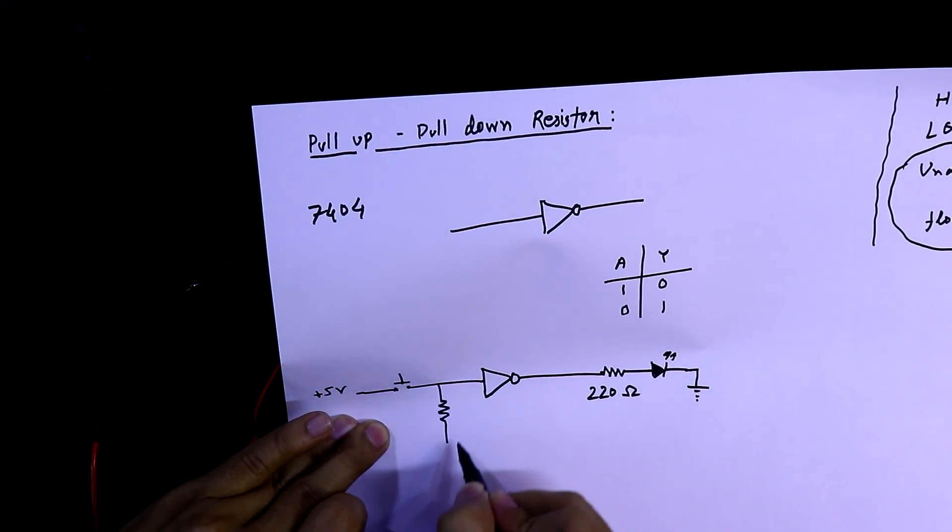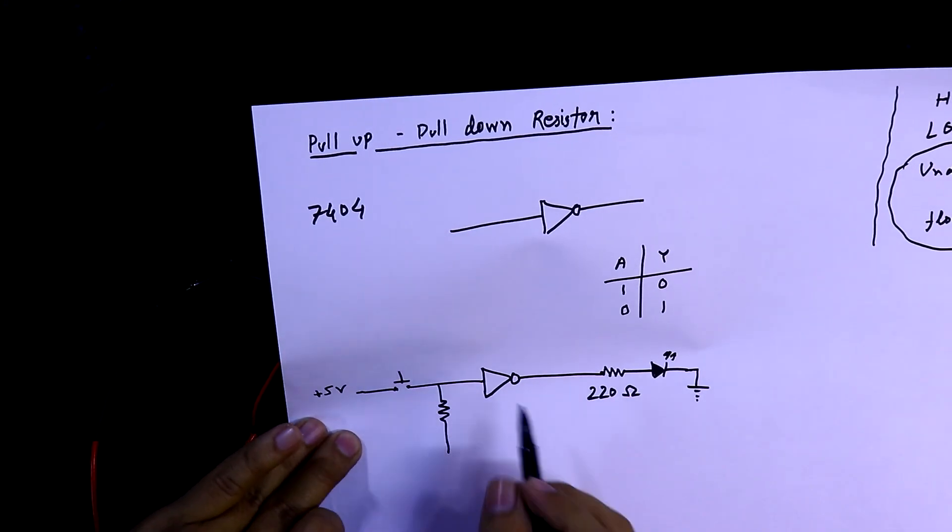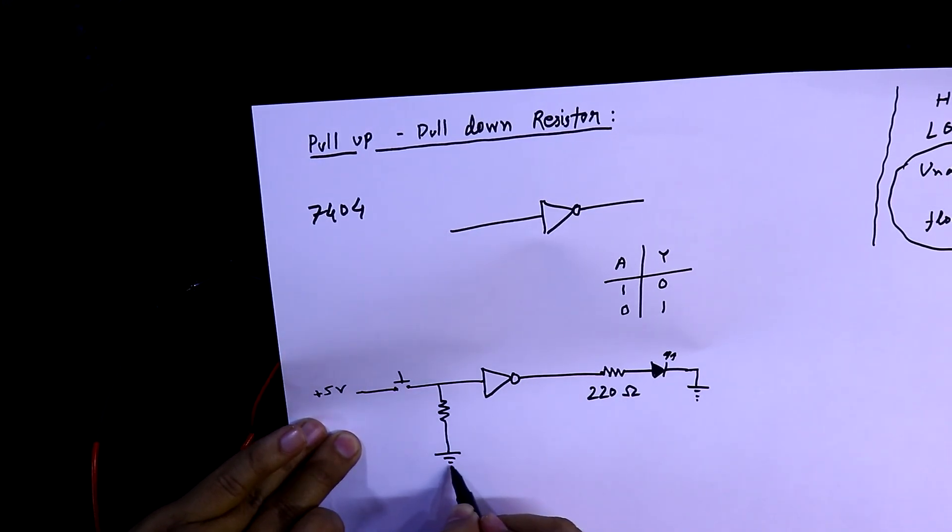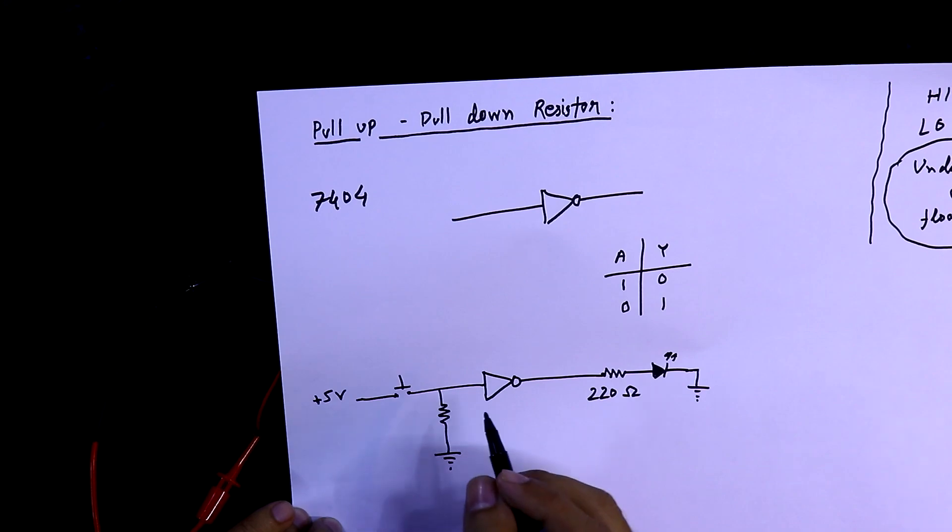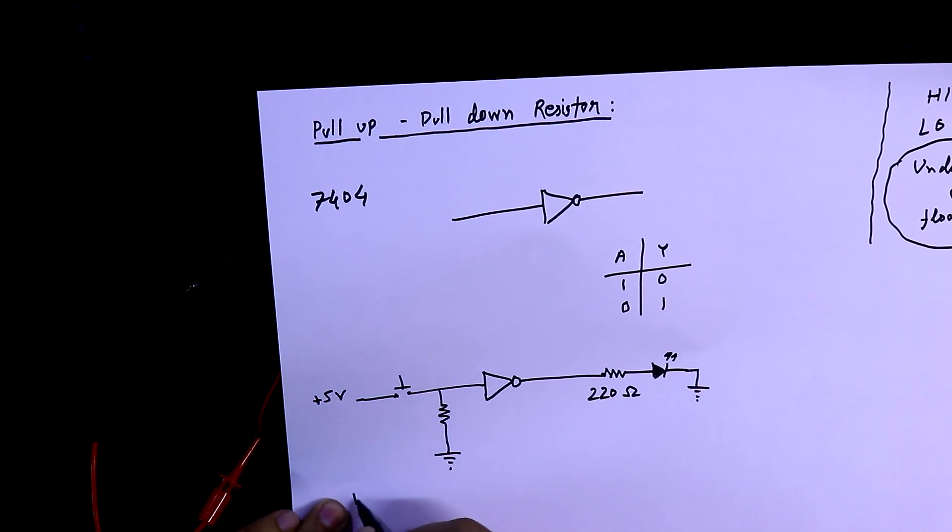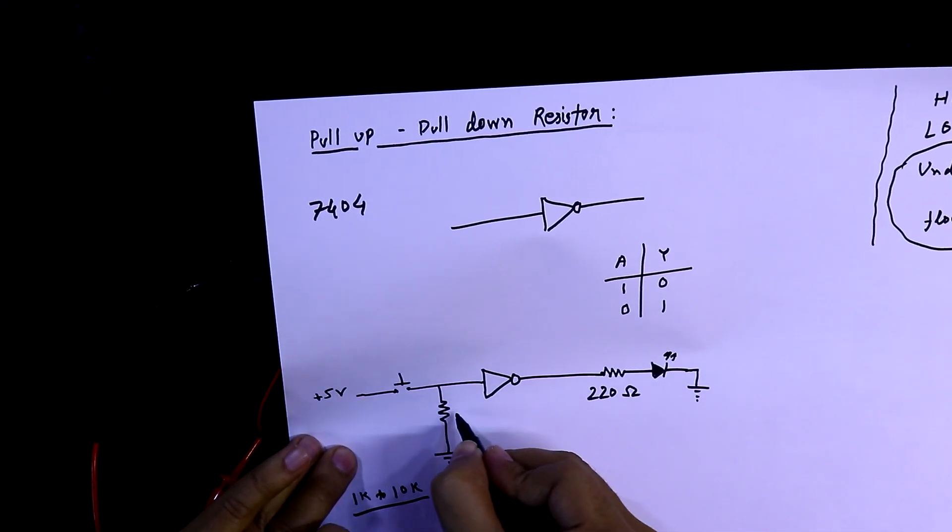Pull-down resistor meaning the resistor should be connected to the ground. And the value of the pull-down resistor could be from 1 kilo ohms to 10 kilo ohms. This is the recommended value. I will use 10 kilo ohms.